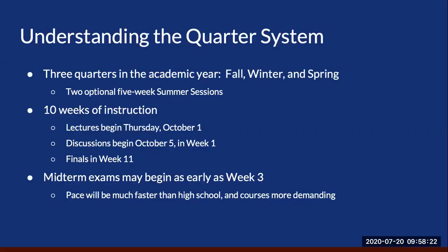Let's talk about understanding the quarter system. We have three quarters — fall, winter, and spring — with two optional five-week summer sessions. Summer school is very popular on our campus. For a quarter system, you have 10 weeks of instruction with the last week being finals. For fall quarter only, school always begins on a Thursday — this year it falls on October 1st.